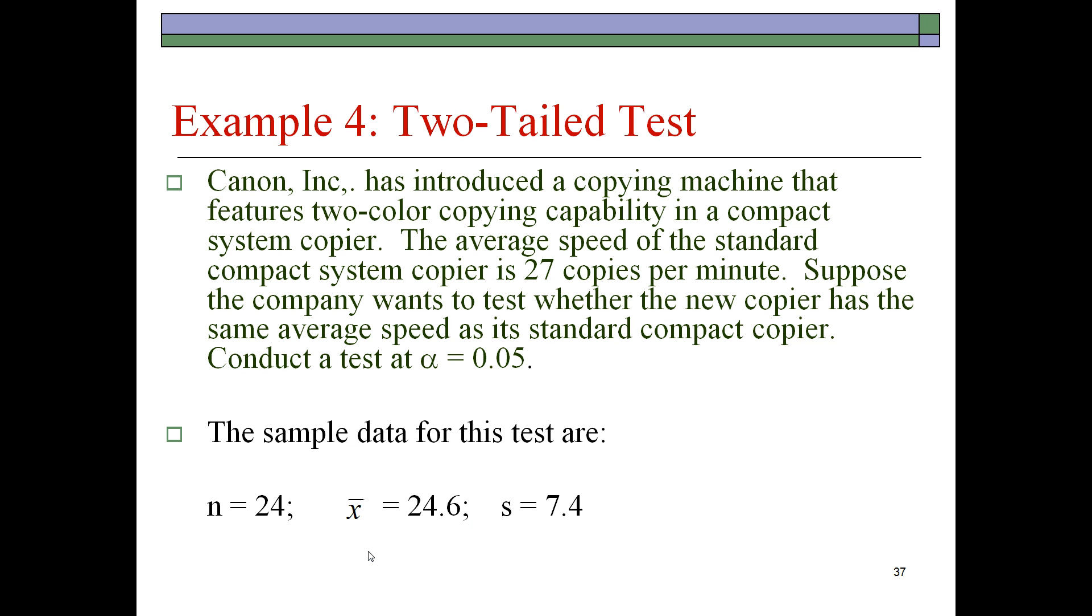So here's an example. Canon Incorporated has introduced a copying machine that features two-color copying capability in a compact system copier. The average speed of the standard compact system copier is 27 copies per minute.